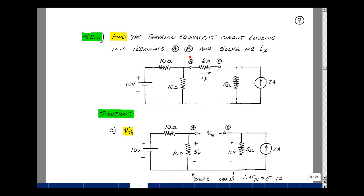Given this circuit, could you find the Thevenin equivalent looking in the terminals A and B and use that to solve for I sub X?